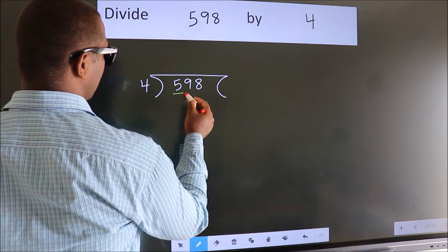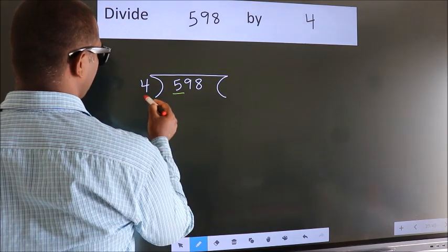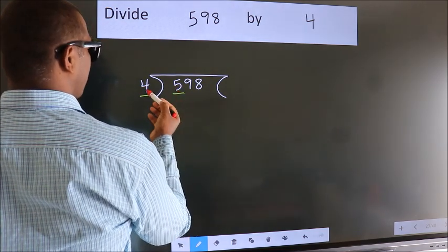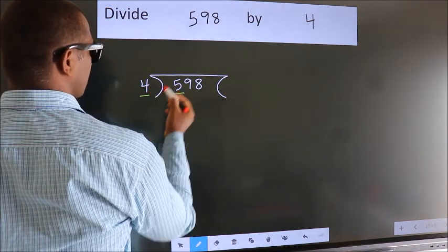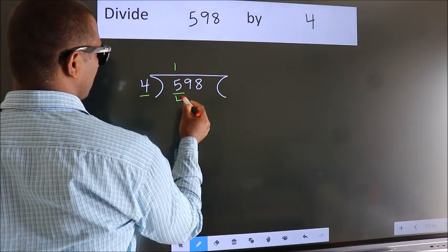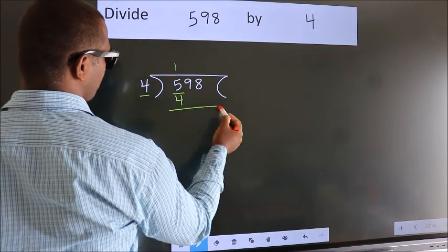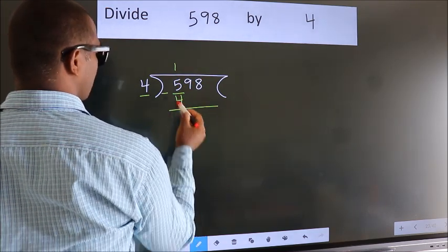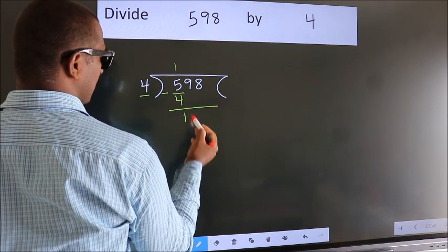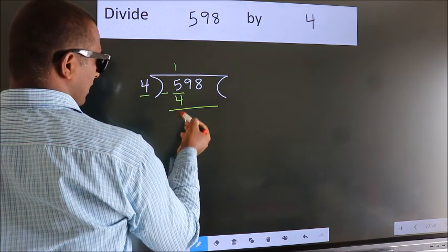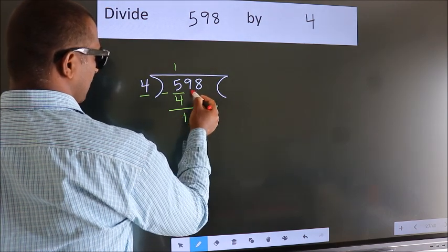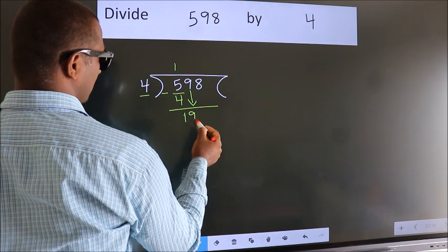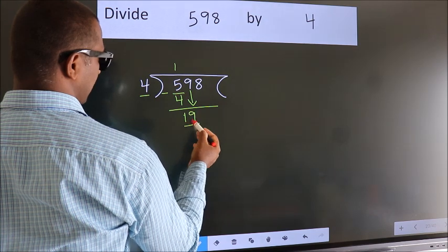Here we have 5, here 4. A number close to 5 in the 4 table is 4 once 4. Now we should subtract. We get 1. After this, bring down the beside number. So 9 down. So 19.